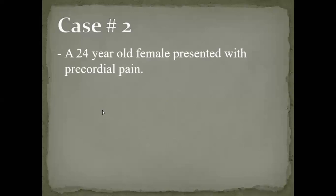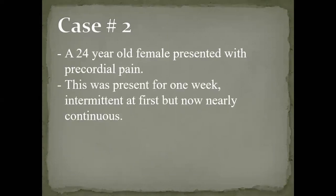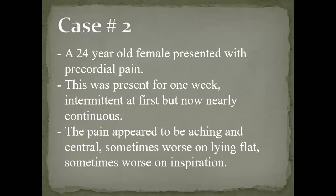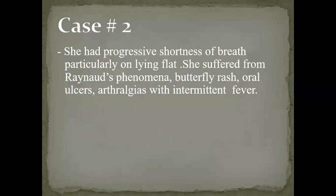The second case scenario is a 24-year-old female presenting with precordial chest pain present for one week, initially intermittent but now nearly continuous. The pain is aching and central, sometimes worsening on lying flat and sometimes worsens with inspiration — suggesting pericardial rather than coronary involvement.